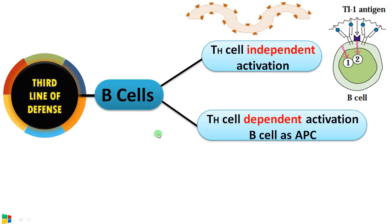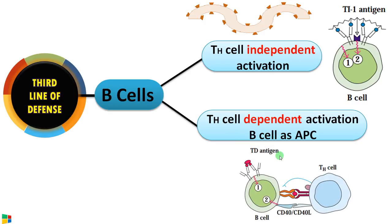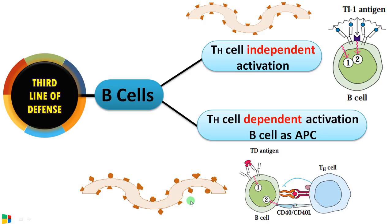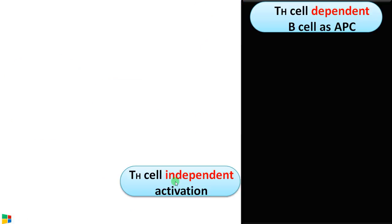The second pathway is T helper cell dependent activation. Here, B cells act as antigen presenting cells. They degrade the pathogen and present a particle of the pathogen on MHC class 2 receptor so that T helper cells can recognize it and take up the case further. As you can see, thymus dependent antigens often have different epitopes of different shapes.